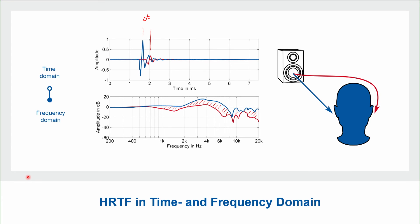To summarize, we can see in the impulse response that we have an interaural time difference, and in the frequency response we can see an interaural level difference.